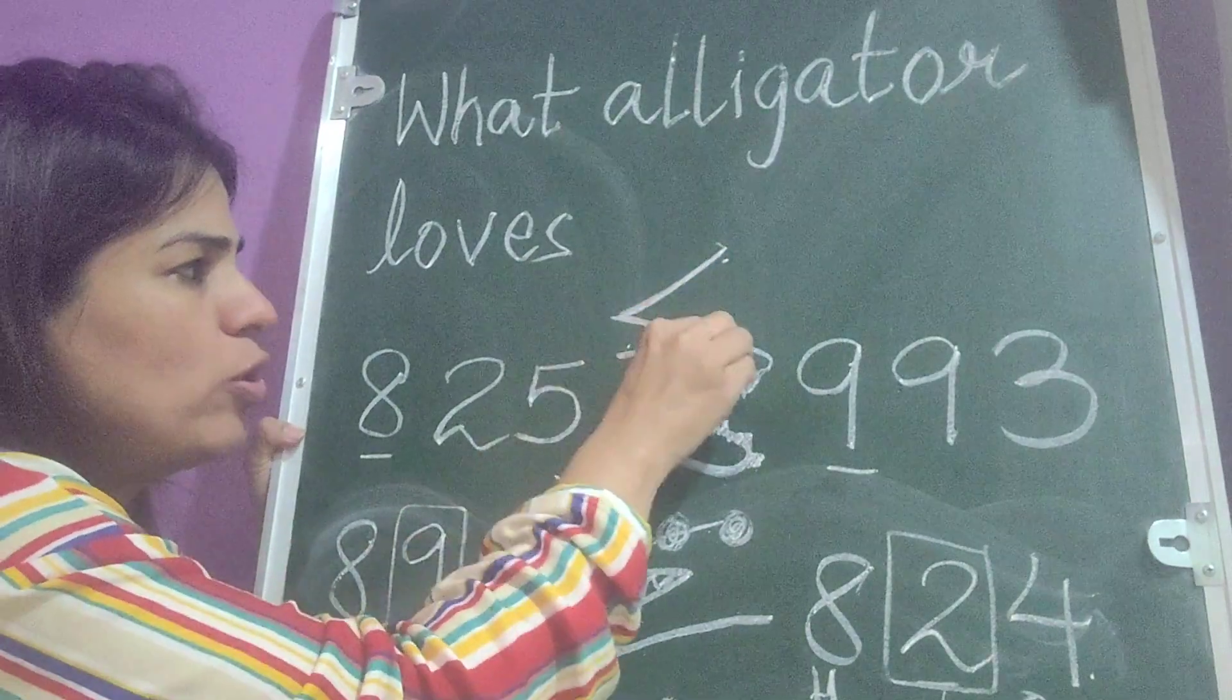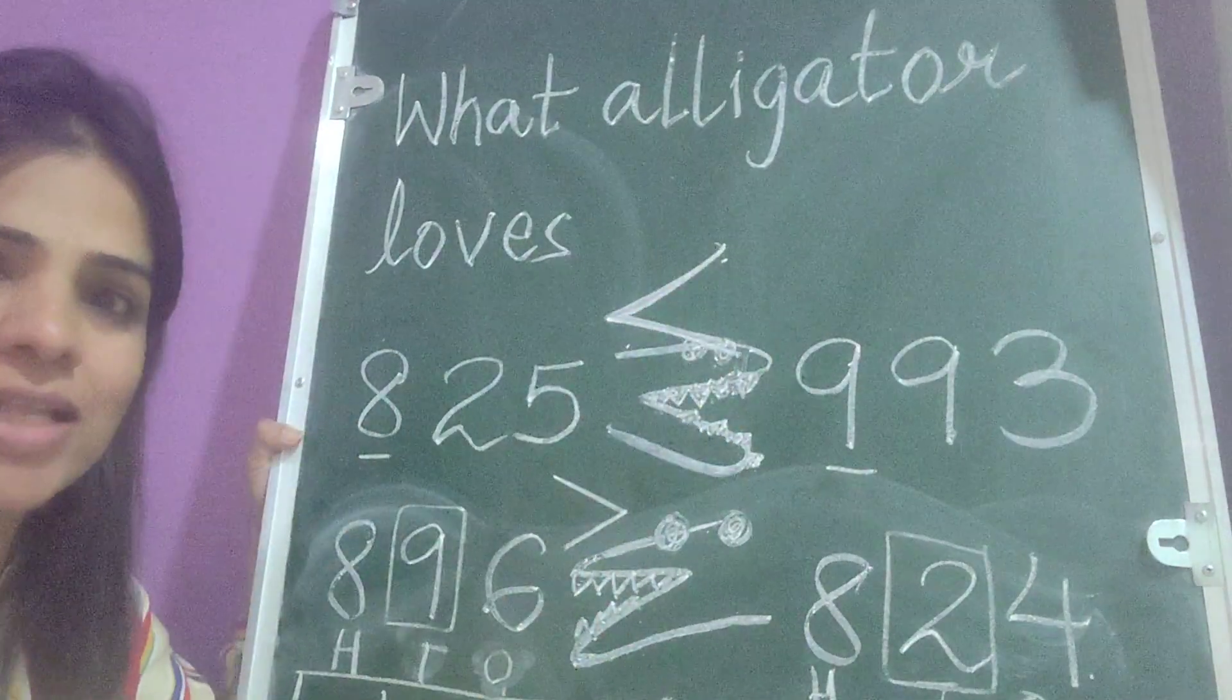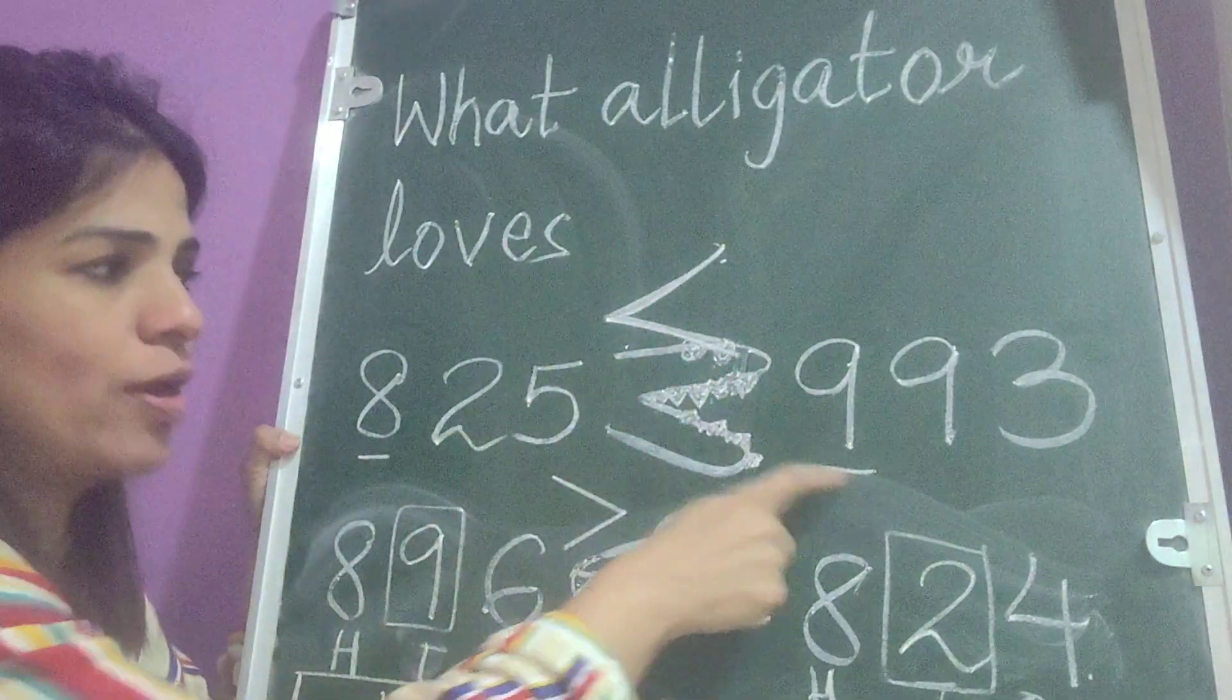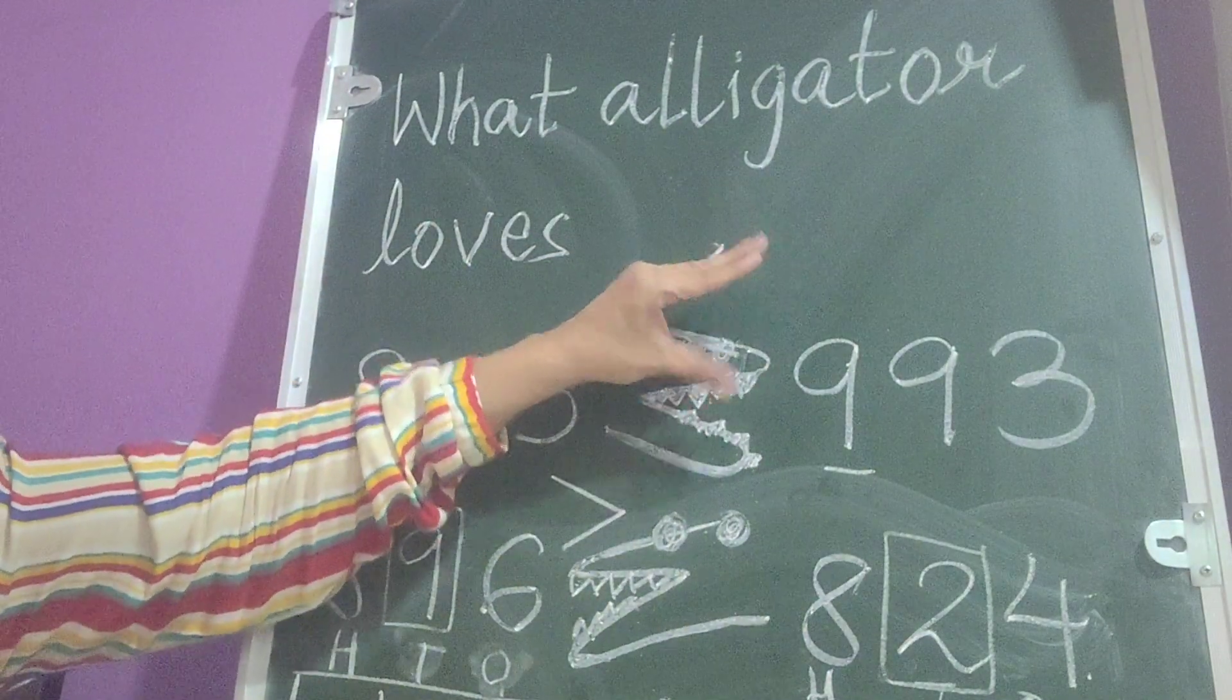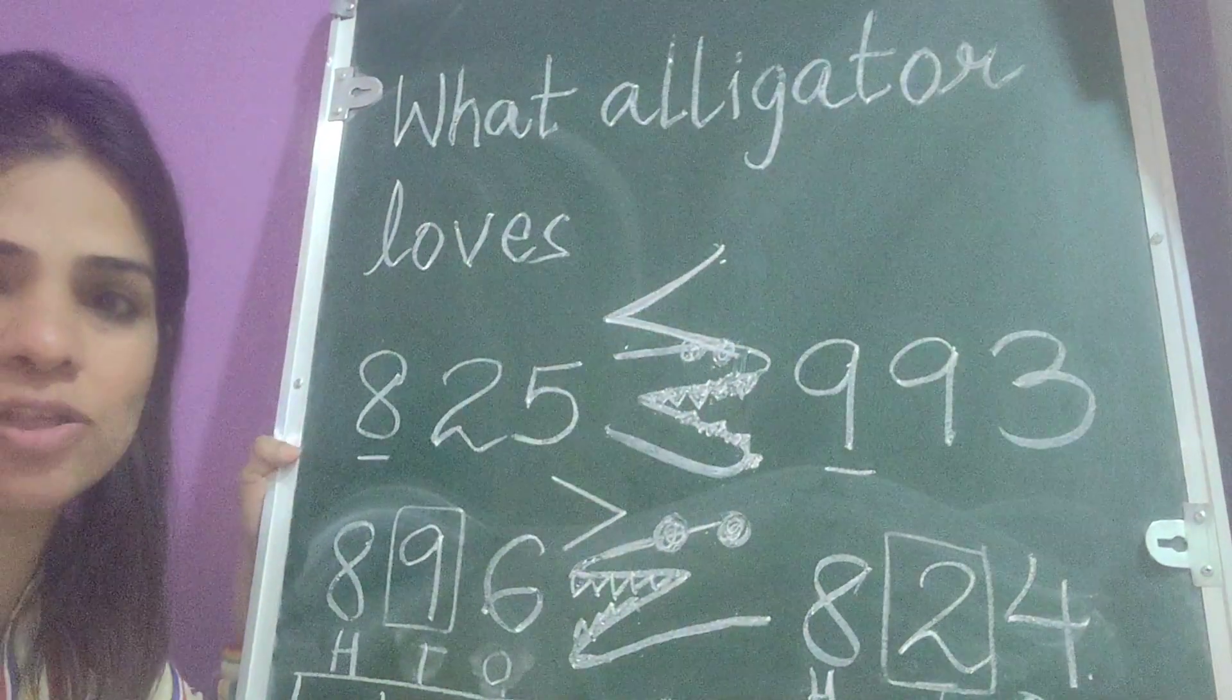And then I put the sign here. That is, this is smaller than big. This is bigger, 993.